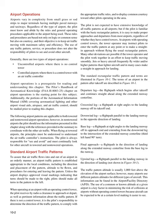The traffic pattern altitude is usually 1,000 feet above the elevation of the airport surface. However, many airports use different pattern altitudes for different types of aircraft. This information can be found in the Airport/Facility Directory, A/FD. The use of a common or known altitude at a given airport is a key factor in minimizing the risk of collisions at airports without operating control towers, because aircraft can be expected to be at a certain level, making them easier to see.